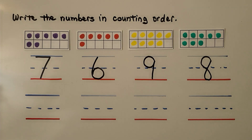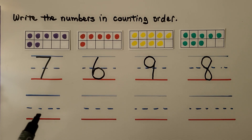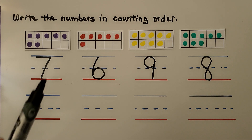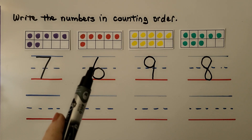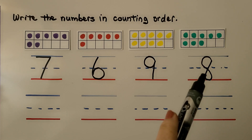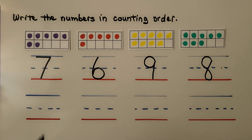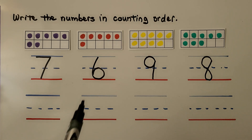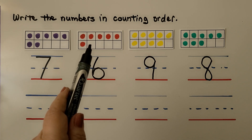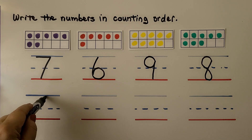Here we have some more — we need to write the numbers in counting order. They have 7, 6, 9, and 8 and they're not in counting order. Which number would go first? It would be the 10-frame with the fewest counters — it would be 6. It has the fewest counters, so we can write 6 here.